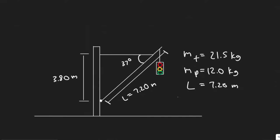In this problem, we're told a traffic light hangs from a pole as shown in the figure. The uniform aluminum pole AB is 7.2 meters long and has a mass of 12 kilograms. The mass of the traffic light is 21.5 kilograms. Determine A, the tension in the horizontal massless cable CD, and B, the vertical and horizontal components of the force exerted by the pivot A on the aluminum pole.